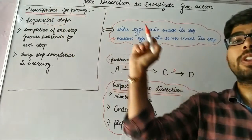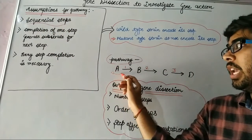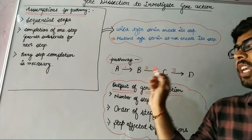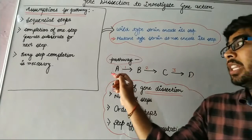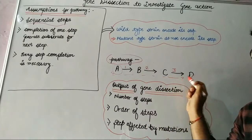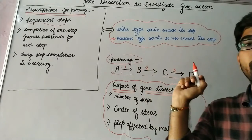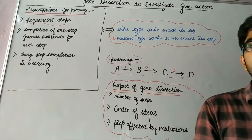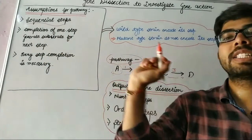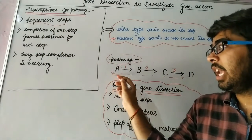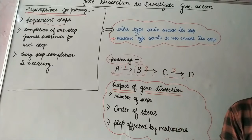There are some assumptions for the biosynthetic pathway. The first one is sequential stepping. It means that substrate A is converted into B, then B is converted into C, and then C is converted into D — in a sequential manner. It does not occur such that A is converted directly into C or B directly into D. The second assumption is that completion of one step generates the substrate for the next step: A converts into B, and B then acts as a substrate for the second sequential step.